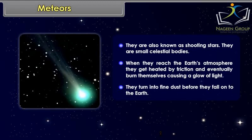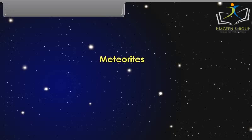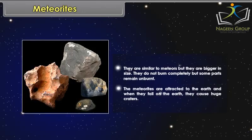Meteorites are similar to meteors but they are bigger in size. They do not burn completely — some parts remain unburnt. The meteorites are attracted to the Earth, and when they fall on the Earth, they cause huge craters.